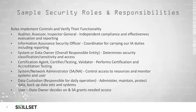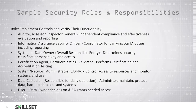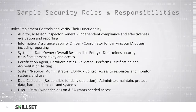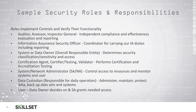It is important that we understand the individuals that use our system and their roles. Auditors, assessors, or the inspector general are responsible for independent compliance and effectiveness evaluation and reporting on their findings. Our information assurance security officer is responsible for carrying out information assurance duties including reporting. Our system or data owner is the overall person responsible for determining the classification or sensitivity of data — and remember for the CISSP exam that the data owner is responsible for classifying data and is ultimately responsible for it. Our certification agent validators or certifiers are responsible for performing certification and accreditation testing. Our system or network administrator is in charge of controlling access to resources and monitoring to make sure systems are working appropriately.